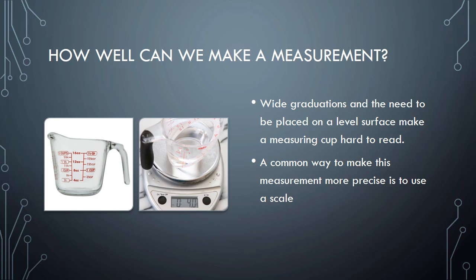When we look at how well we can make a measurement, we need to look at the measuring tools we're using in the first place. With a measuring cup, it has wide graduations, needs to be placed on a level surface. You've got to wait for the liquid inside there to stop sloshing around to be able to read it. A common way to improve this measurement would be to actually use a scale as opposed to just the measuring cup and use the numbers we obtain from a scale to measure a liquid volume.